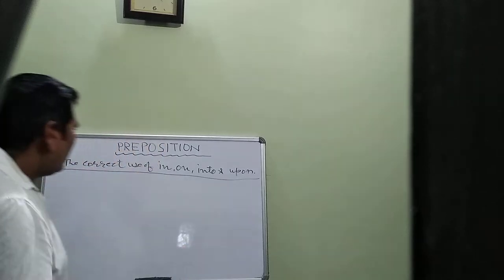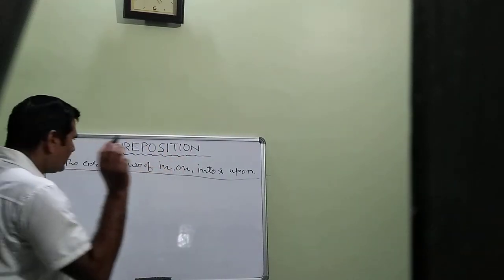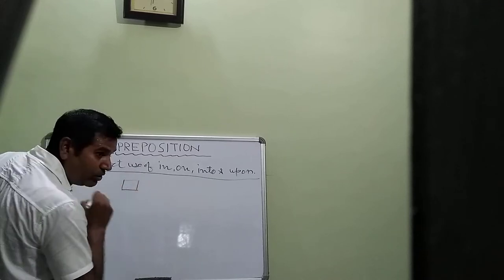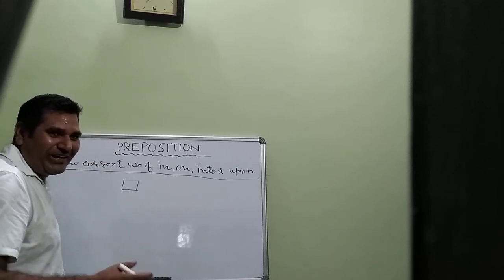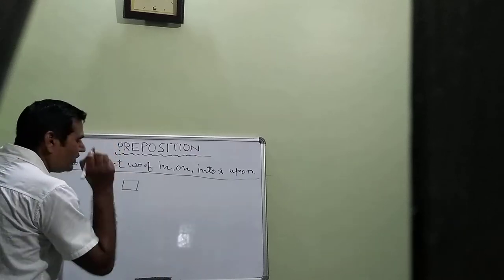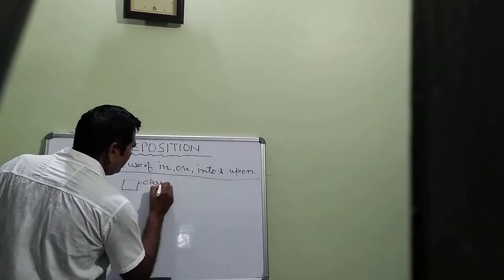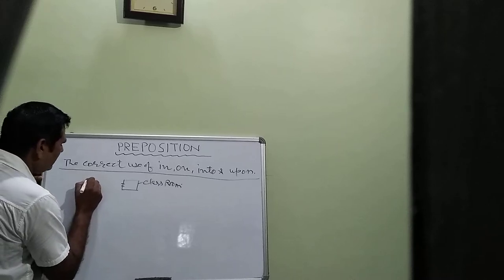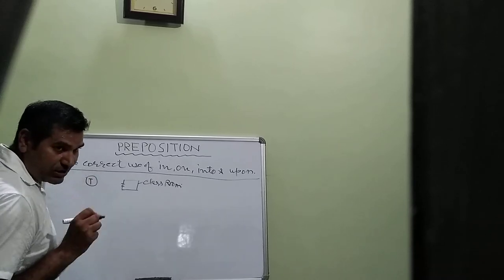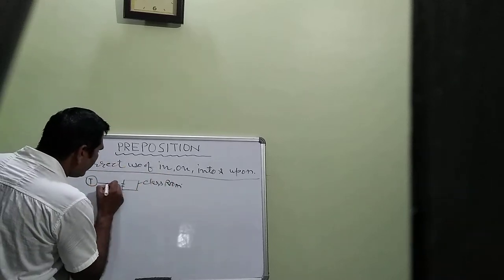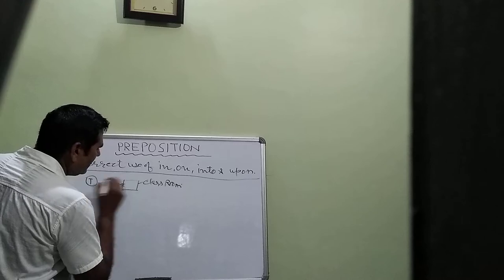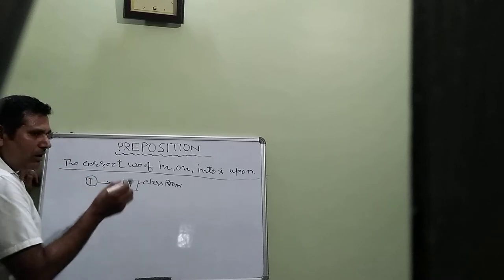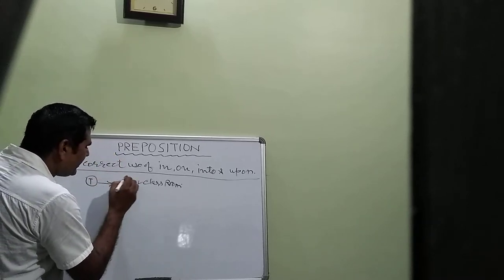For example, let's look at four prepositions using a classroom. Suppose this is a classroom. This is the entrance, this is the door, and this is a teacher. The teacher is entering into the classroom — that is movement. Now the teacher has come inside; he is in the classroom. So the teacher went outside and from outside he has entered into the room — that is movement, so we use into.